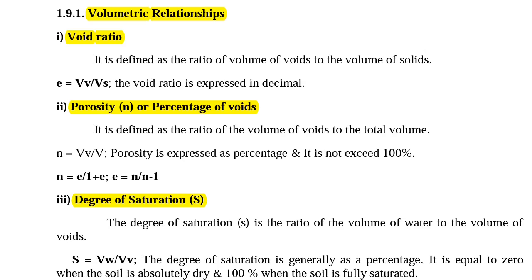Next we are going to see porosity. Porosity N is defined as the ratio of volume of voids to the total volume. The formula for porosity is N equal to Vv divided by V, expressed in terms of percentage, and it does not exceed 100%. The porosity and void ratio are interrelated: N equal to E divided by 1 plus E, and E equal to N divided by 1 minus N.